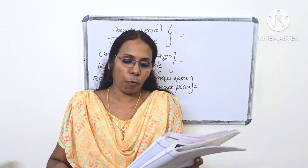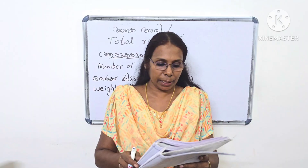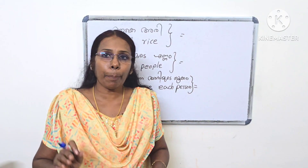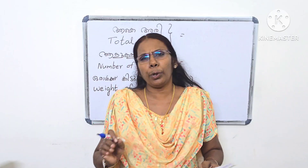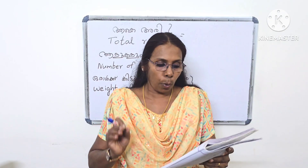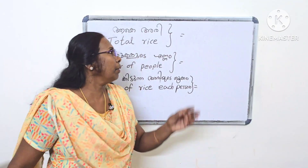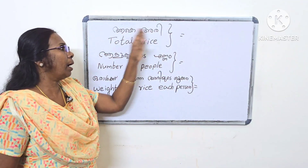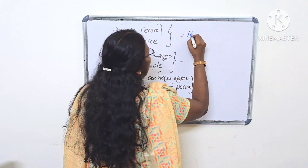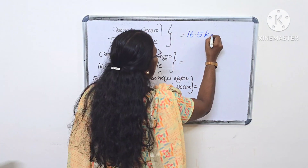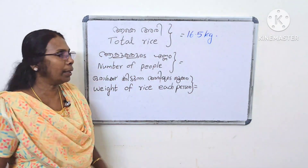How many kilograms did each get? The number of 4.8 kilograms is put in a row. How many kilograms did each get? Now, this is the answer. Total rice: 14.8 kilograms. What is the number of 5 kilograms?